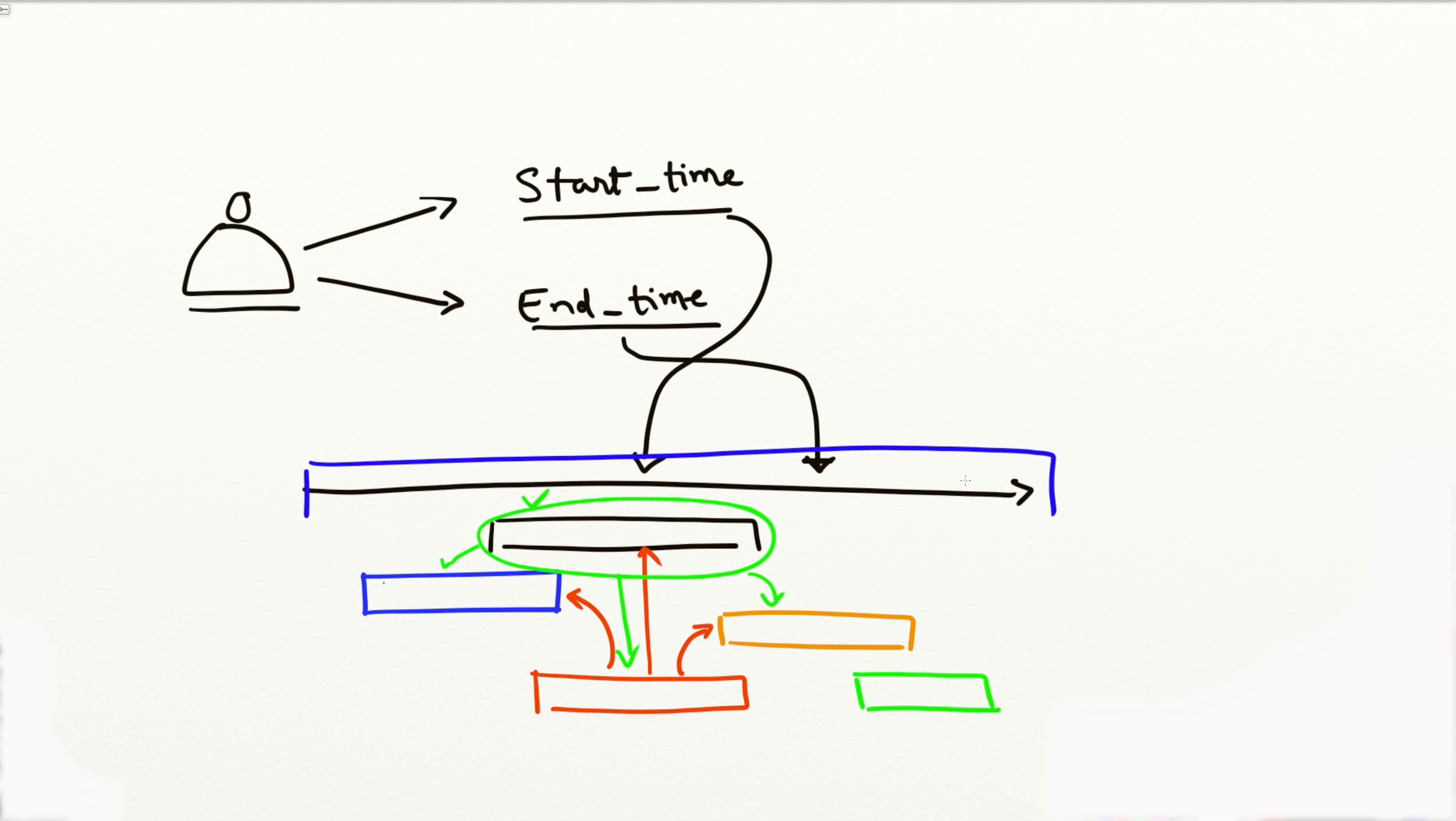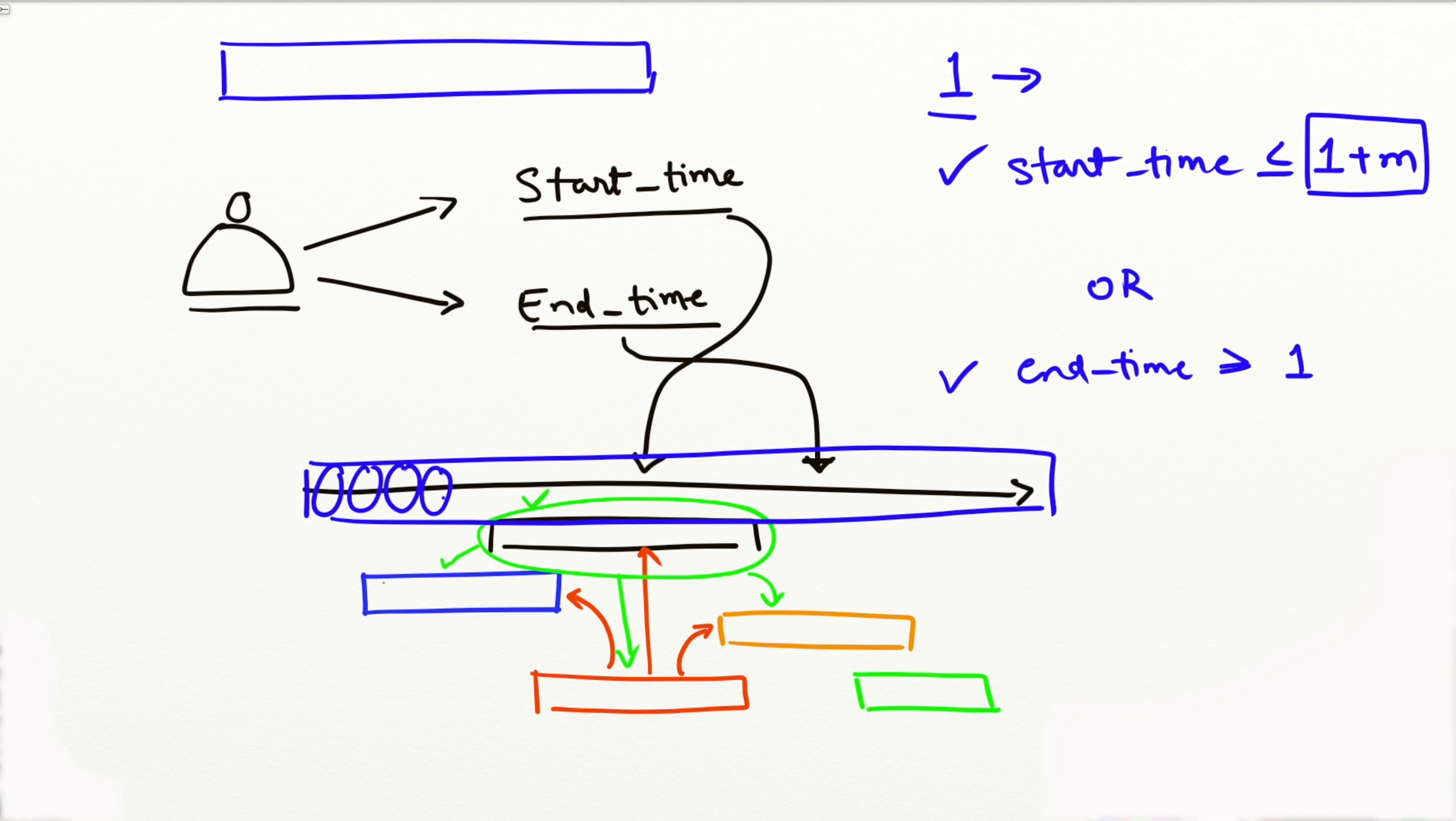The brute force approach of this is rather simple. All I need to do is take this timeline. And for every possible point of entry, let's say index one, I see how many people have a start time less than equal to one plus M, so this tells me that before I leave the cafeteria they joined. Or end time greater than equal to one, so they left after I joined.